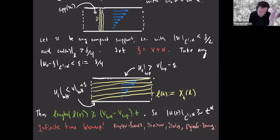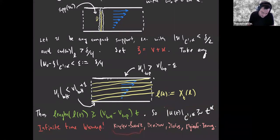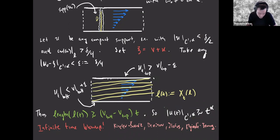There have been many such examples since then. I'd like to point out the one by Kiselev and Shvydkoy that exhibited the sharpness of the double exponential growth on a disk domain. The works by Denisov, Elgindi, and Zhang also study similar phenomena.